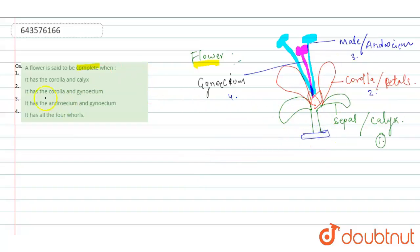So let's read the options carefully. It has corolla and calyx? No, this is wrong. It has corolla and gynosium? No. It has the androsium and gynosium? No. And fourth is given, it has all the four whorls, means flower must have all four parts: sepal, corolla, androsium, and gynosium.